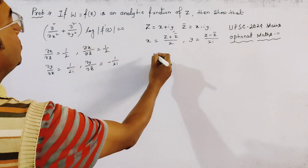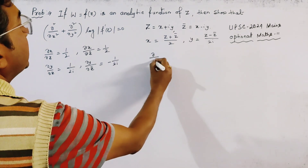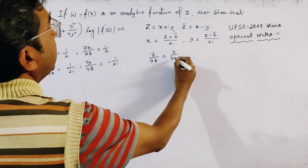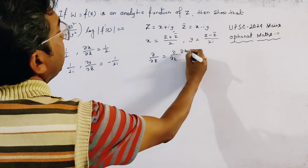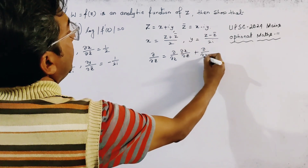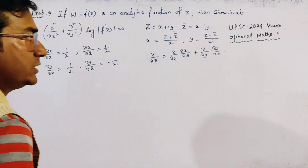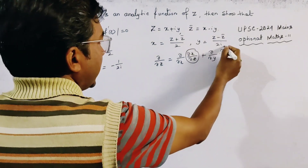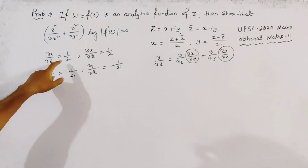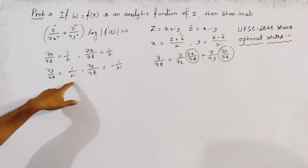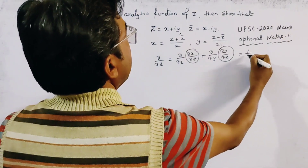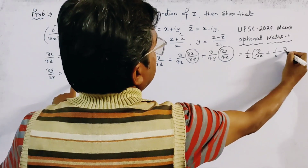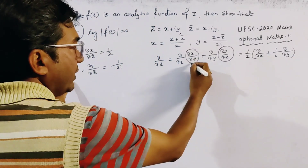Now we find the operator ∂/∂z. By the chain rule: ∂/∂z = (∂/∂x)(∂x/∂z) + (∂/∂y)(∂y/∂z). Substituting ∂x/∂z = 1/2 and ∂y/∂z = 1/(2i), we get ∂/∂z = (1/2)(∂/∂x + (1/i)∂/∂y).